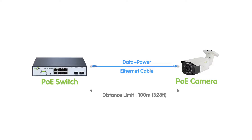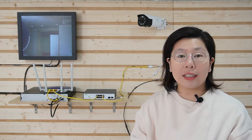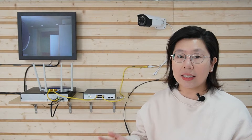However, it is crucial to be aware of the limitations of PoE technology. One significant constraint is the maximum distance over which PoE can reliably transmit power and data, typically around 100 meters — that's 328 feet. And beyond this distance, voltage drop occurs, potentially leading to power loss and degraded network performance.